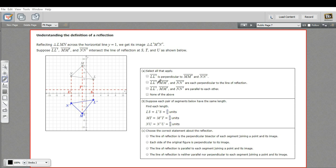Then it says LL', MM', and NN'—all those segments that connect the points and the reflections—are perpendicular to the line of reflection. That is exactly what's going on here. Absolutely 90-degree angle on each of those. So that is true.